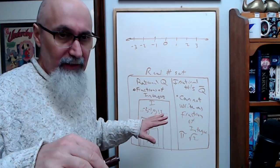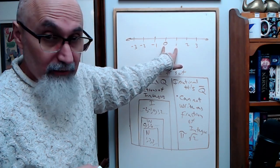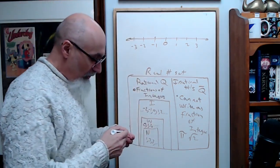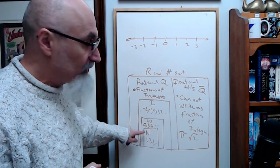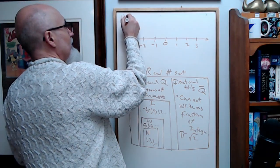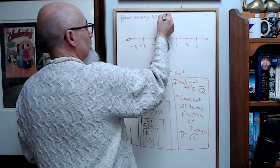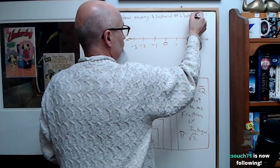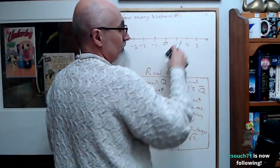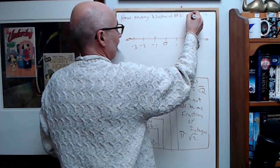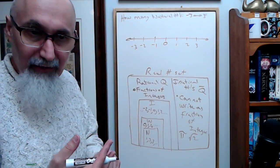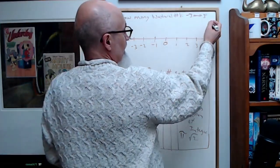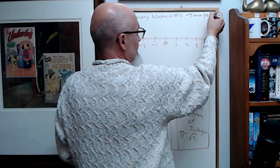Going back to Zeno's paradox — there's an infinite number of numbers between zero and one. Let's build this up from human evolution. How many natural numbers are there between negative three and three? Natural numbers are counting numbers: one, two, three — no zero, no negatives, no fractions. So there are only three natural numbers between negative three and three.